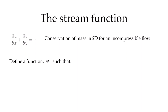Let's define a function psi, our stream function, such that the u component of velocity is obtained by taking the derivative of psi with respect to y, and the v component of velocity is obtained by taking the negative derivative of psi with respect to x. Why would we do that? Let's substitute that into the conservation of mass equation.